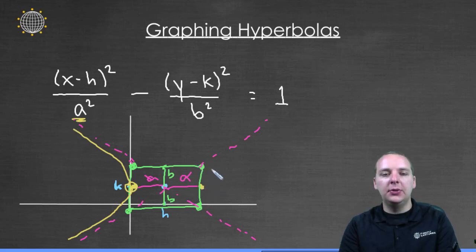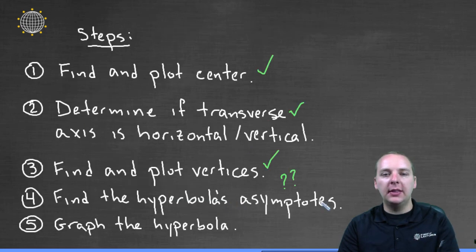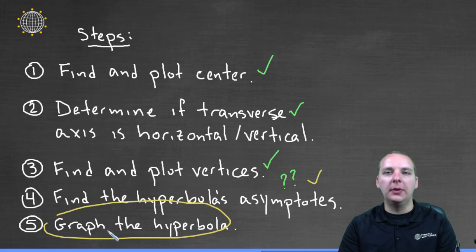And since these two vertices here were on these two sides of the asymptotes, it's going to open left and right as opposed to opening up and down. So if you follow these steps here, then I think you'll be well on your way to graphing all of your hyperbolas.